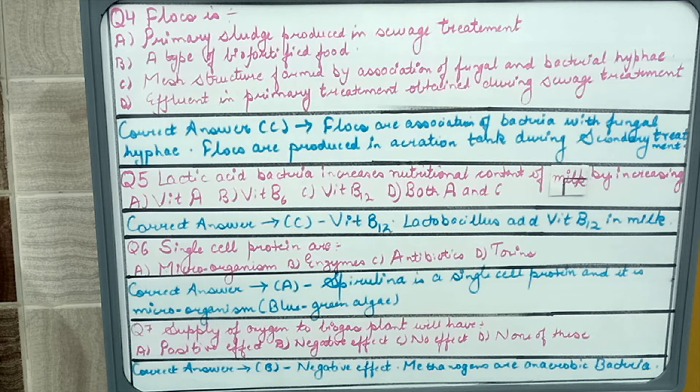Question fifth: lactic acid bacteria increases nutritional content of milk by increasing vitamin A, vitamin B6, vitamin B12, or both A and C. The correct answer is vitamin B12. Lactobacillus adds vitamin B12 in the milk and hence increases its nutritional content. This question is also directly from NCERT and the second role that lactic acid bacteria does is that it stops the growth of disease-causing organisms.